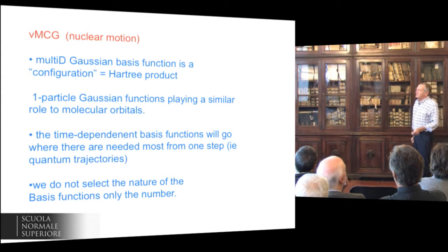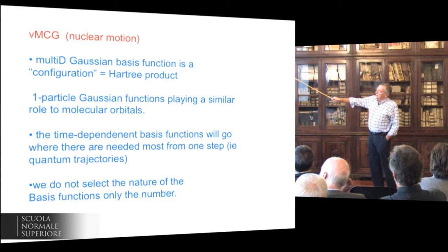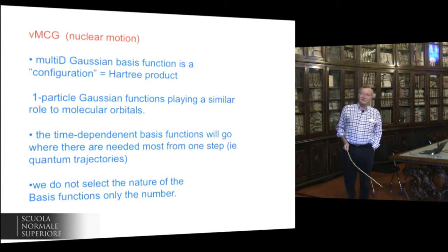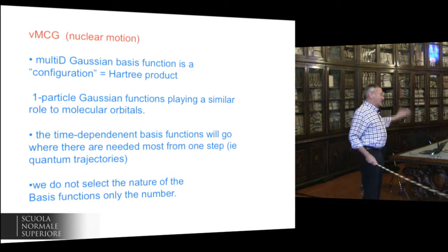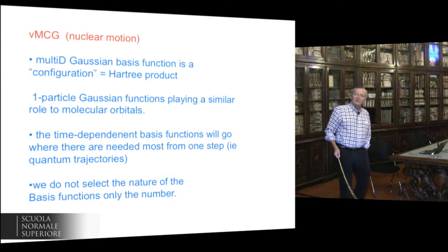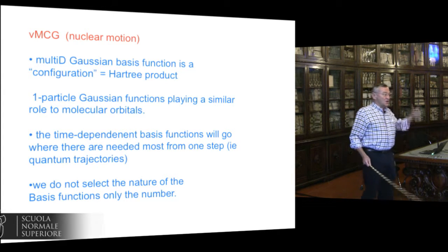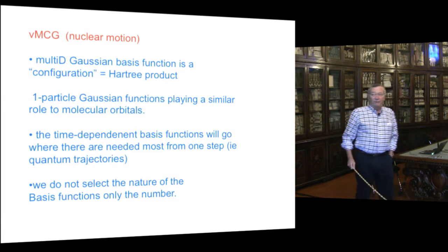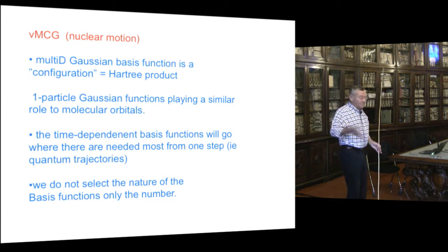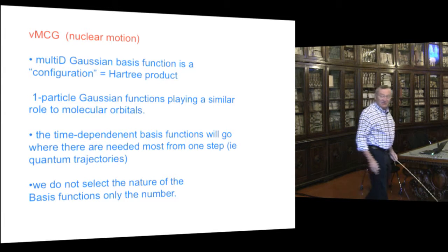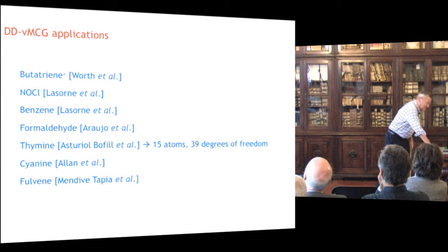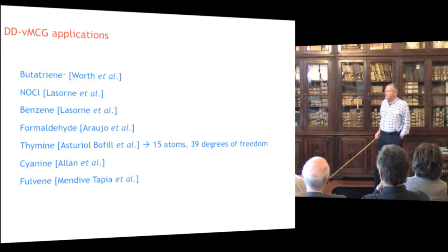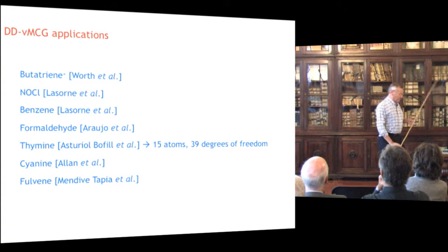To summarize the theoretical part: we have a multidimensional Gaussian basis where each basis function is a Hartree product of Gaussians. The one-particle Gaussian functions are like molecular orbitals but describing nuclear motion. The time-dependent basis functions go where they're needed most — they're optimized from one step to the other. We select only the number of basis functions; we don't predispose the orbital exponents or analogous parameters.